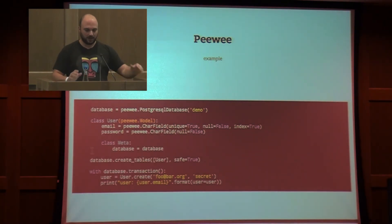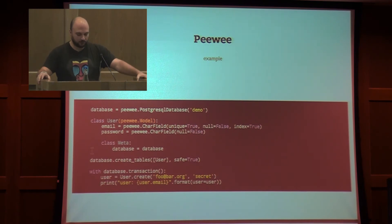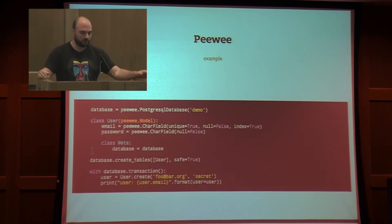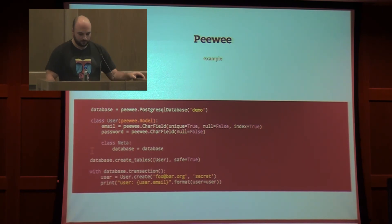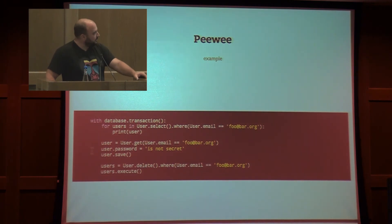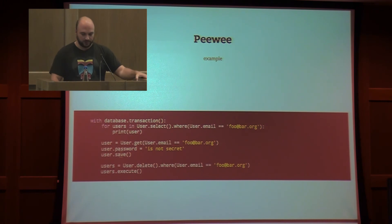PeeWee — a small example. Just create a new connection to Postgres, create a model for your user specifying the email and password fields, create the table with create_tables. For migrations to your schema, you can use that. The system handles transactions for you — you don't need to manually start a transaction, commit, or rollback. You can read data, get one record, do a where query to fetch data, save it as an update, and then execute a delete.